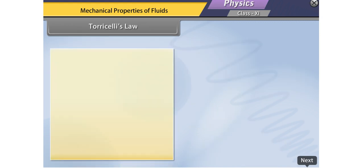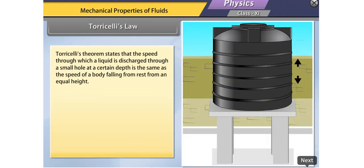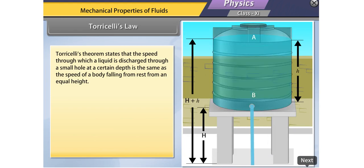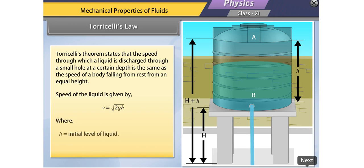Torricelli's theorem states that the speed with which a liquid is discharged through a small hole at a certain depth is the same as the speed of a body falling from rest from an equal height. The speed of the liquid is given by v = √(2gh), where h is the initial level of the liquid and g is the gravitational constant.